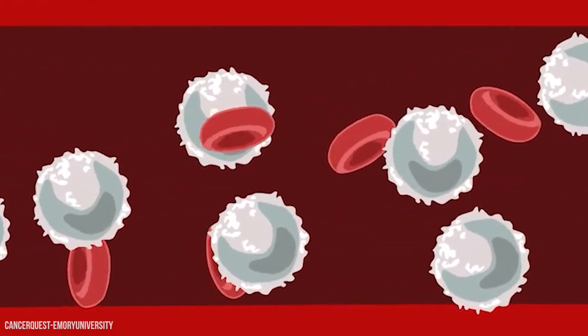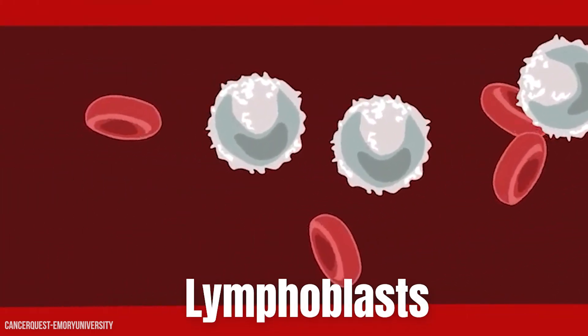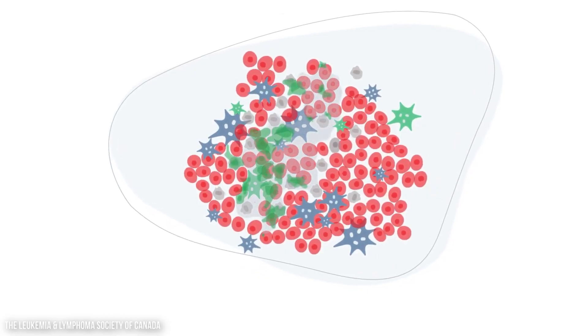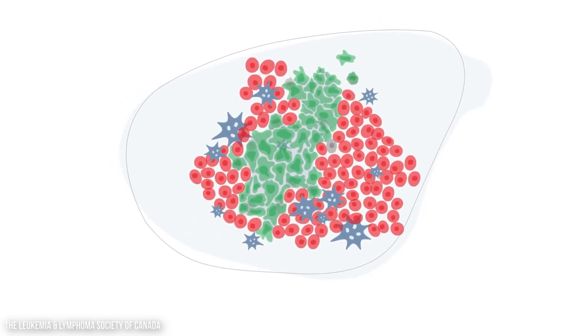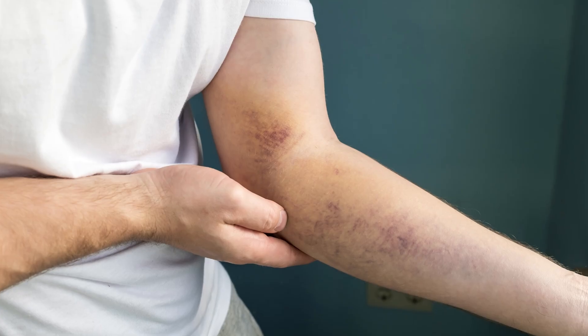In ALL, the bone marrow starts producing lots of immature white cells called lymphoblasts. These cells never mature properly and don't function the way they should. Instead, they multiply quickly and take up lots of space in the bone marrow, crowding out the healthy red cells, white cells and platelets — the types of blood cells that your body needs. This can lead to things like anaemia, more frequent infections, and easy bruising or bleeding.